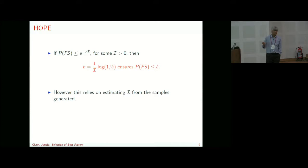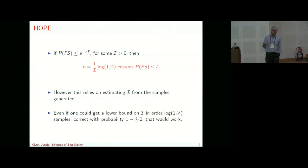The big punchline of this talk is that these things cannot be done — you cannot have order log(1/delta) algorithms for this problem unless you have additional information. Even if you could get a lower bound on I of order log(1/delta) which is correct with probability 1 − delta/2, that would also do the job.